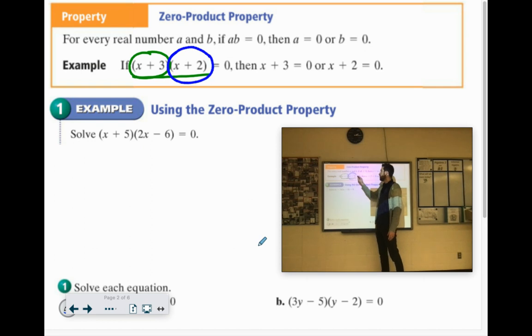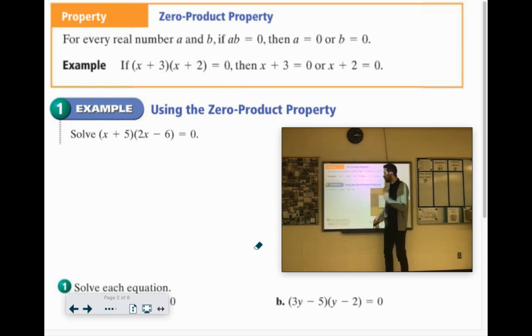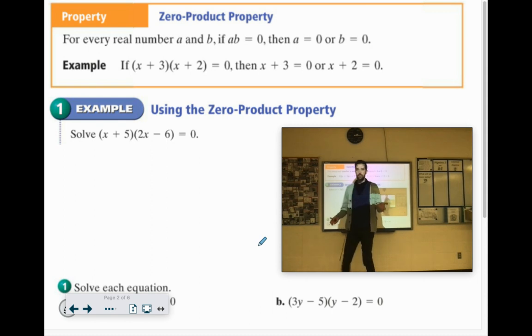Conversely, if I can get the x plus 2 part to equal 0, then it doesn't matter what the other part would be, because that times 0 equals 0. So to solve problems with the 0 product property, you take each part with a variable, and you set that part equal to 0, and then you solve it.